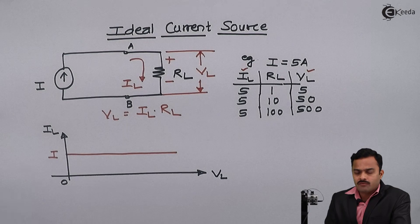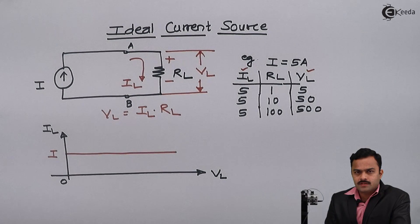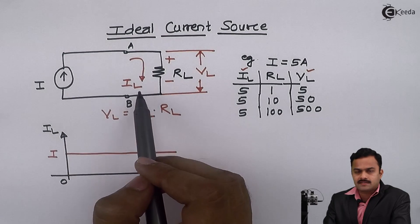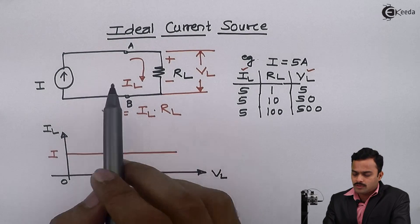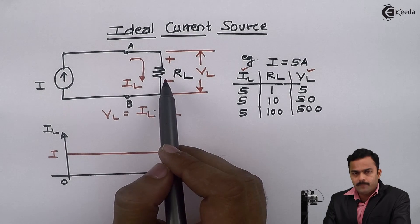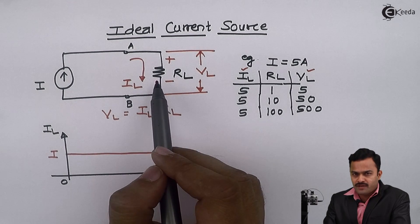So here we have seen that whenever current source is given, no matter what are the elements connected in series to that current source, we should not bother about the current flowing through that particular element because that current will be fixed and given by current source value.